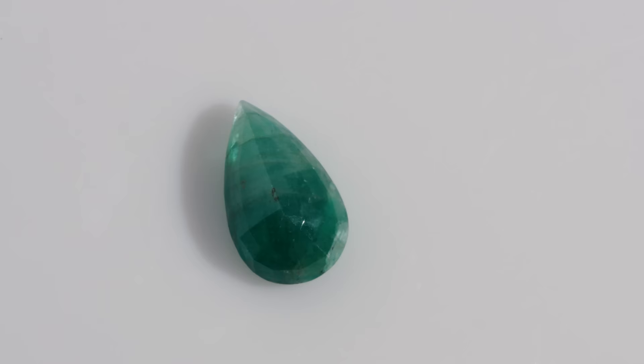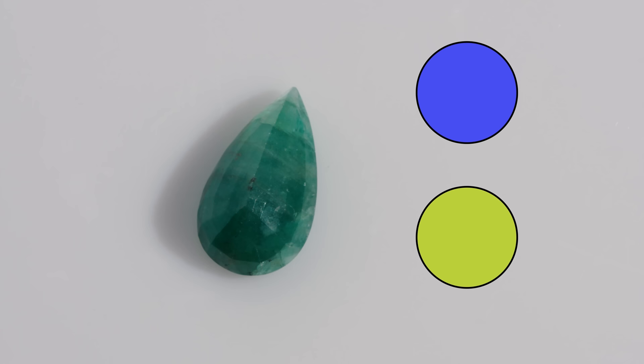So what is an emerald? It is a green member of the beryl family. It has undertones of blue or yellow, but the primary color is of course always green. The color of the emerald is primarily what gives it its value. So the greener it is, the more valuable it is.